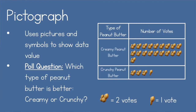With my pictograph, you can see that at the top I have my categories — creamy peanut butter and crunchy peanut butter — and then a column for the number of votes. The symbol I used is a peanuts emoji, where a full emoji equals two votes and half of the emoji equals one vote. So if you look at creamy peanut butter, there should be 38 votes in total, and for crunchy peanut butter there were seven votes. This shows that creamy peanut butter won in my poll.